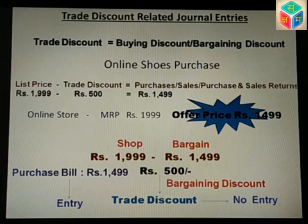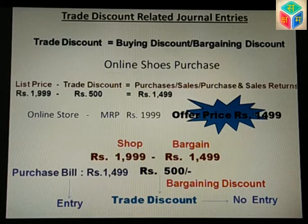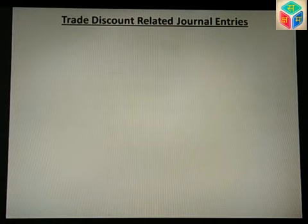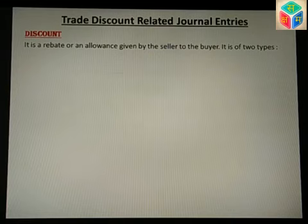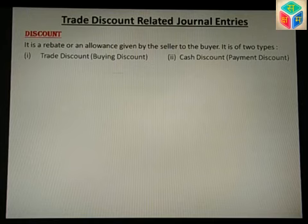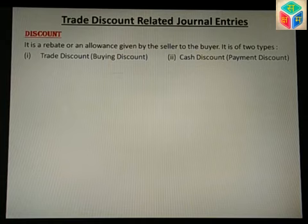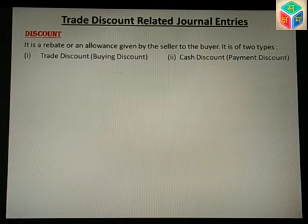This discount is given to motivate customers to buy goods in large quantities. I hope the overview was clear. Now, the definition of discount: it is a rebate or allowance given by the seller to the buyer. It is of two types — first, trade discount (buying discount), which we are discussing today; and second, cash discount (payment discount), which we will discuss in the next video.